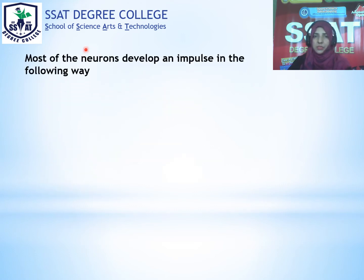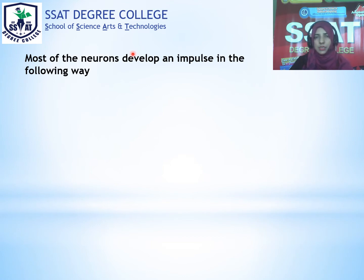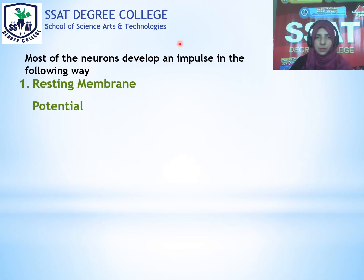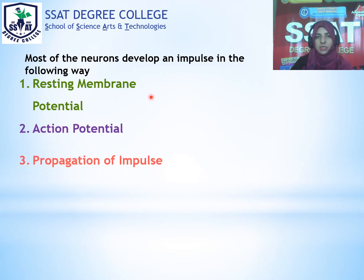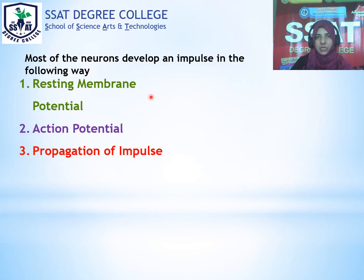Most of the neurons develop an impulse in the following ways. Number one is resting membrane potential. Number two is action potential. Number three is propagation of impulse. And number four is synapse.